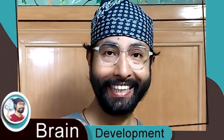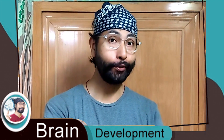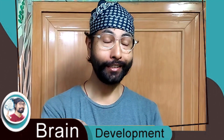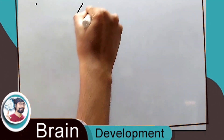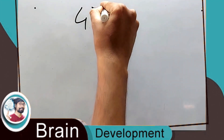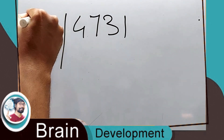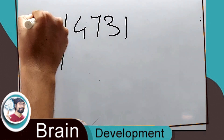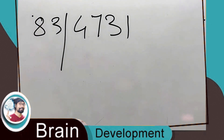Hi guys, this is Elinom, you're watching Green Development. Today we're going to learn division — the best method to learn division. Let's go. So let's divide 4731 by 83.